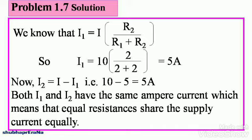Now, I2 equals I minus I1. You know that currents are added at a node. So, we get I is equal to I1 plus I2 and rearranging we can say I2 equals I minus I1. Therefore, 10 minus 5 equals 5 amps. Both I1 and I2 have the same ampere current which means that equal resistances share the supply current equally. You can note this down. This is also a very nice trick for applications and problems to come.